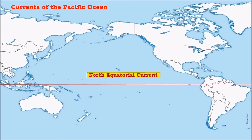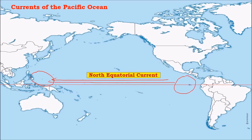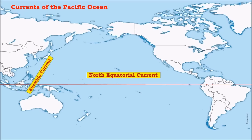In El Niño conditions, the trade winds are weaker, so the piling up of ocean water at the Indonesian islands is lower and the upwelling process along the Peru and Ecuador coast is comparatively lower. In normal conditions, warm water piles up at the Indonesian islands as part of the eastern Pacific moves towards the western Pacific through the North Equatorial Current. This current then moves towards the Japanese islands and Kamchatka Peninsula as the Kuroshio current, which is a warm current.